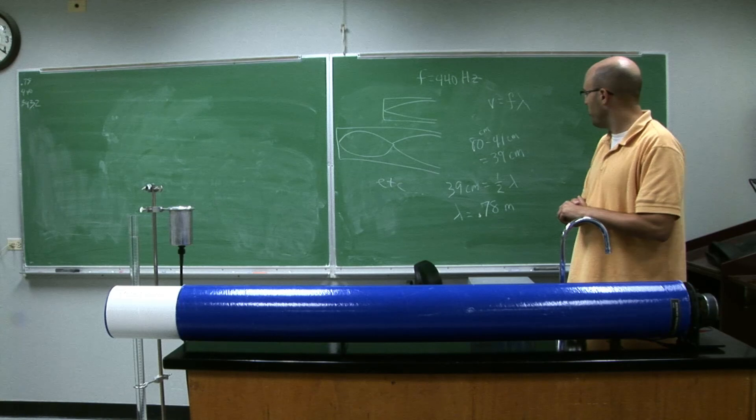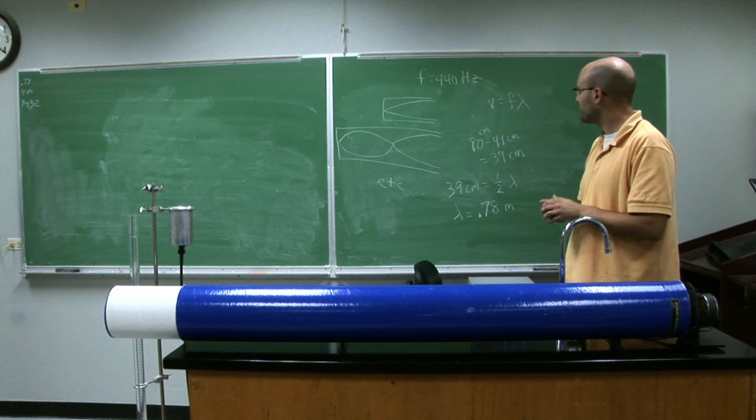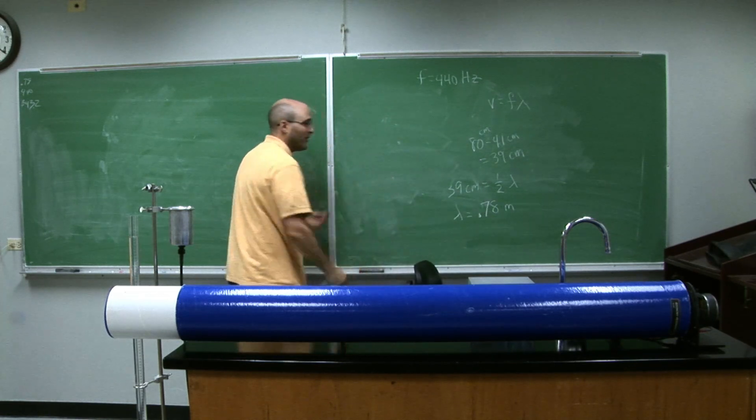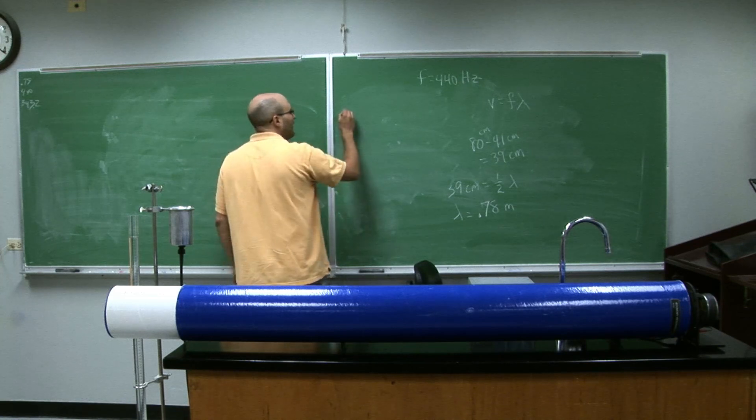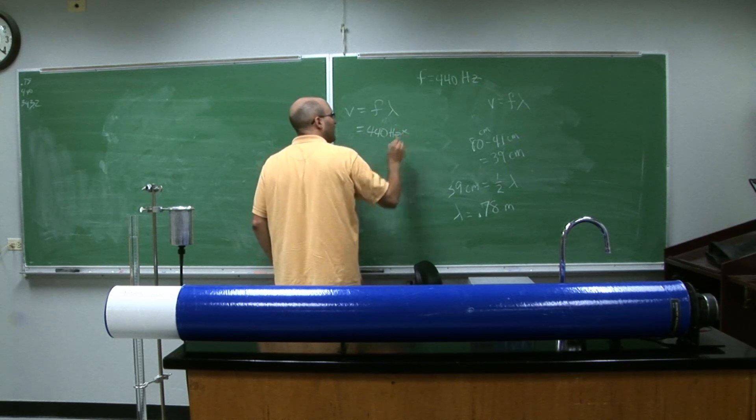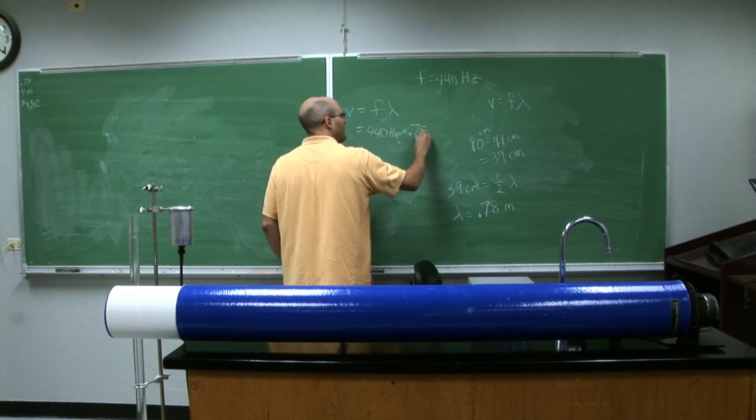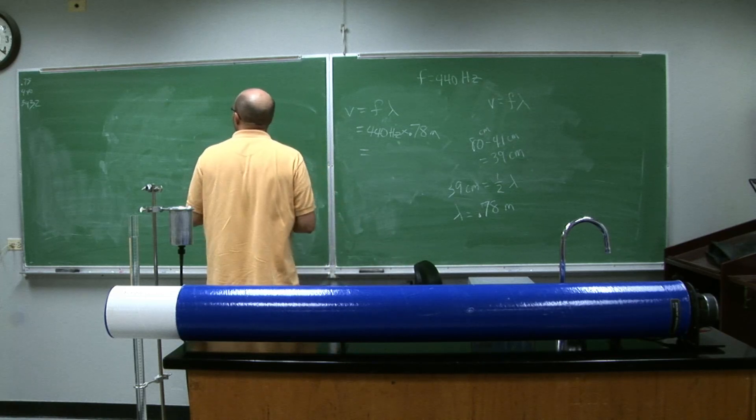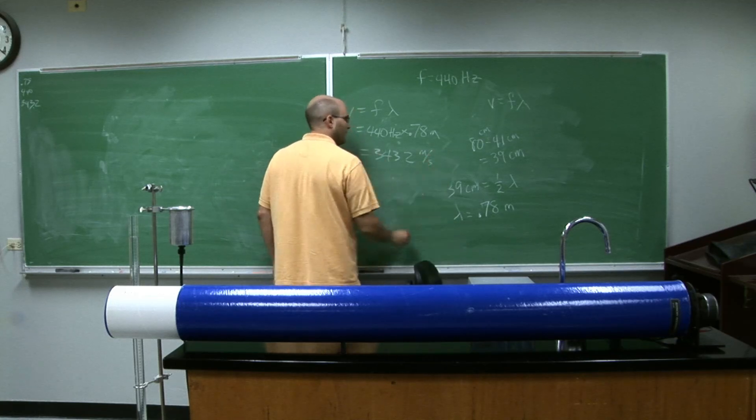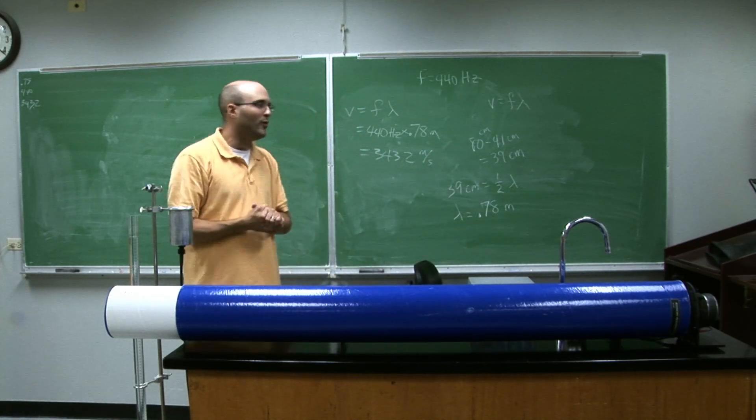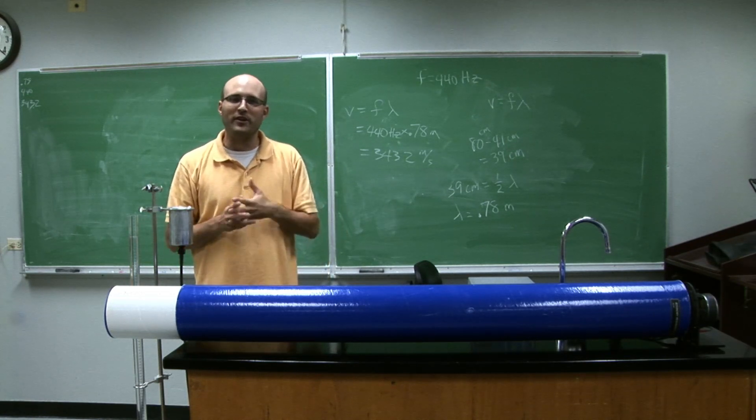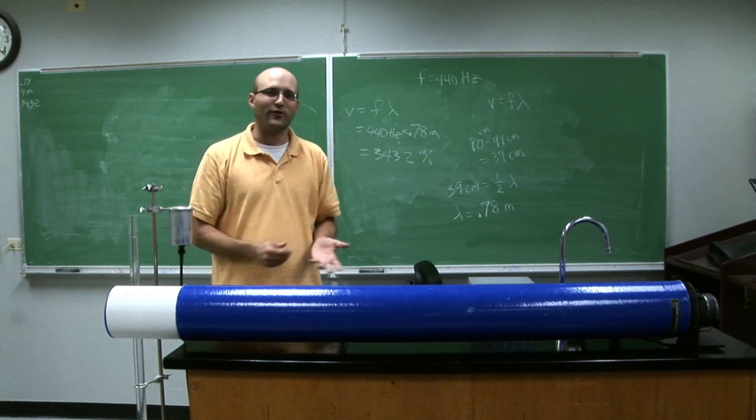So 78 centimeters is 0.78 meters. So just to see if we get something reasonable here, I can make an estimate of the speed of sound. If you take 440 hertz times 0.78 meters, if you go through your calculator and put those numbers in, it's 343.2 meters per second. And depending on room temperature, we usually take the speed of sound to be either 343 meters a second or 344.